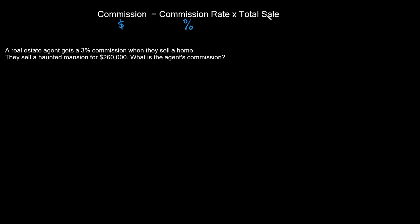The formula for calculating commission is: commission equals the commission rate times the total sale. For units, commission is normally in dollars, the commission rate is a percentage, and the total sale is also in dollars.